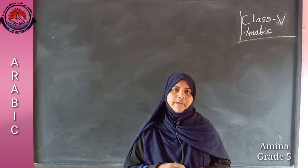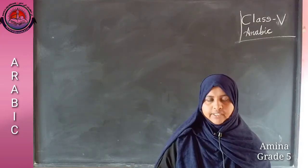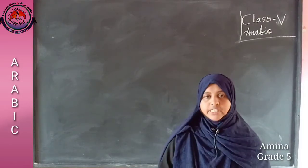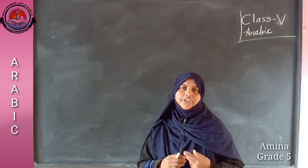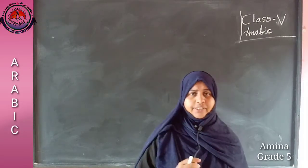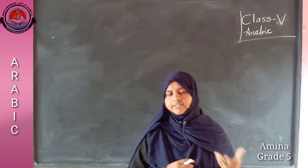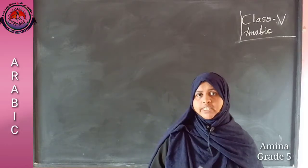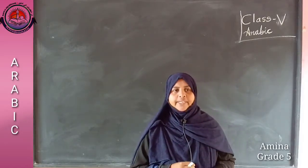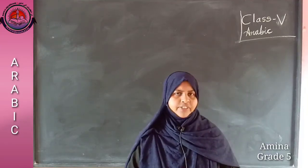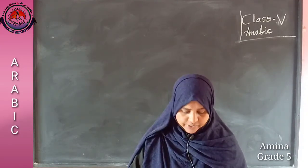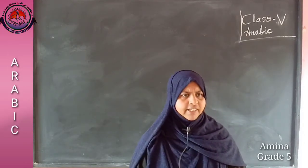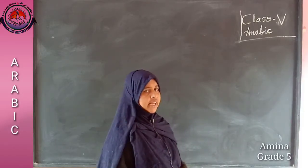First, we have to find out some answers. Some questions are there. If you read the lesson, you will get it easily. First question is man kana hamit. What is the meaning of man? Man means who. We learned about the interrogatives also in our previous classes - ma means what, man means who. Man kana hamit - who was Hamid? That was our first sentence in our lesson. What was the first sentence? Kana hamitun amilan fidu kaan.